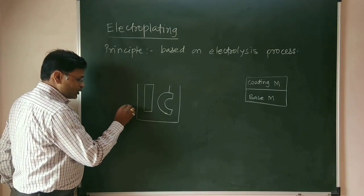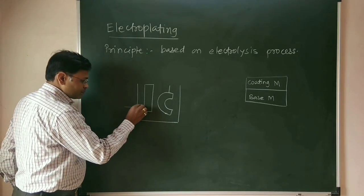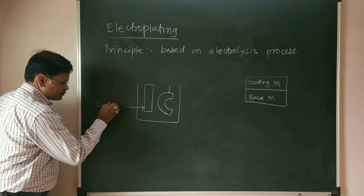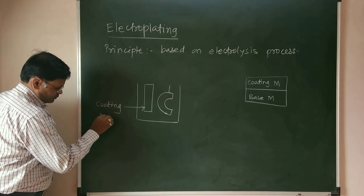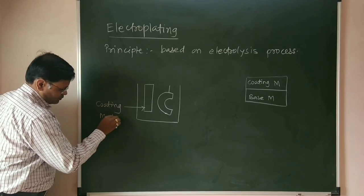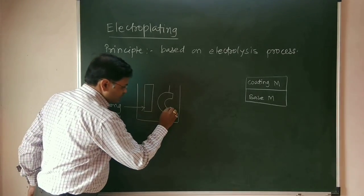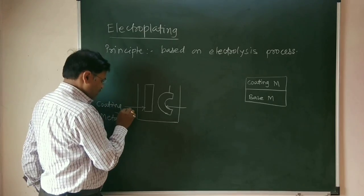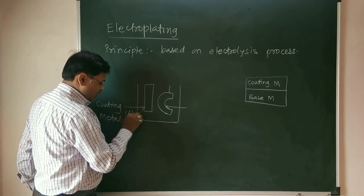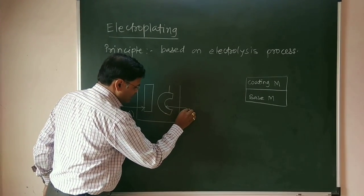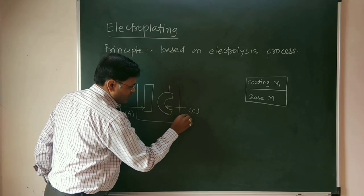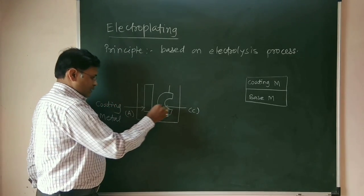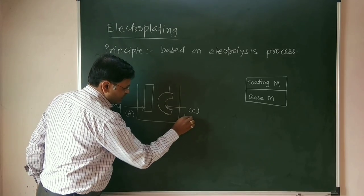This coating metal is acting as the anode, and this base metal is acting as the cathode. So, this is the anode and this is the cathode.